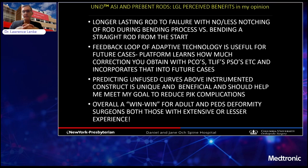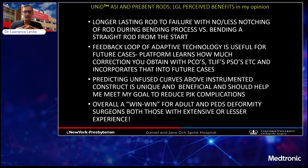The feedback loop of this adaptive technology is useful for your future cases. The platform learns how much correction you obtain with various maneuvers — PCOs, TLIFs, PSOs, etc. — and incorporates that into future cases for better prediction of what you'll achieve. Predicting the unfused curves above the instrumented construct is very unique and beneficial and should help meet our goals to reduce PJK complications. Overall, this is really a win-win technology for adult and pediatric deformity surgery for surgeons with extensive or lesser experience.